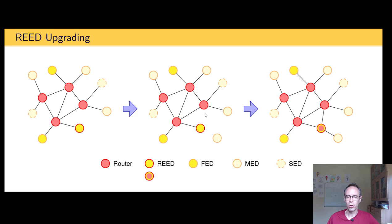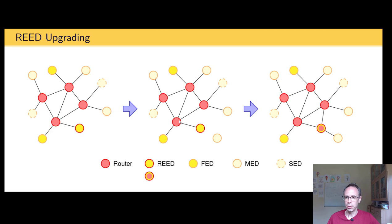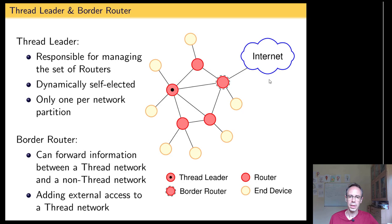With embedded microcontrollers having limited resources, more routers means bigger routing tables. So Thread tries to keep the number of routers as small as possible — this makes things faster and more reliable. When a router is not needed anymore, the REED can downgrade back to a full end device. But it's a good concept for network stability: if a router malfunctions or the connection degrades, the REED can simply upgrade to a router again.